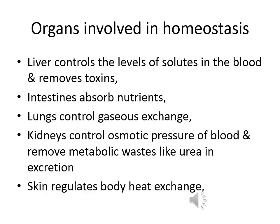We look at the liver and its control of the solutes in the blood and removing toxins present in the blood. The intestines absorb nutrients that are digested and then put them into the blood and tissue fluid. The lungs control the oxygen content and the carbon dioxide content in the blood. The kidneys control the osmotic pressure of the blood and therefore remove metabolic waste products like urea in excretion.